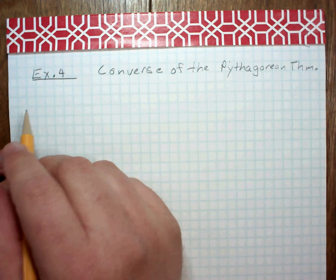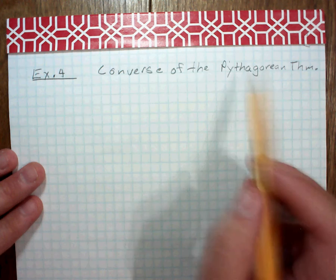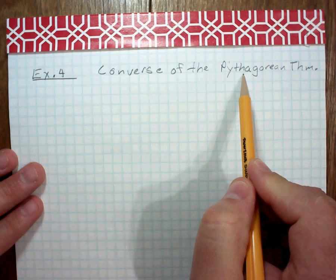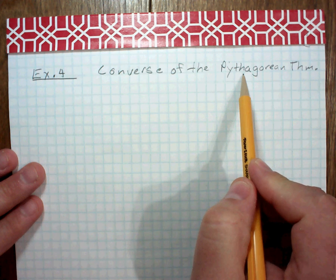And so, in the Pythagorean Theorem, what we're saying is that if I have a right triangle, then the sides will equal in the sense that a squared plus b squared equals c squared.